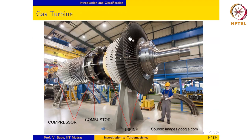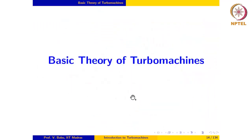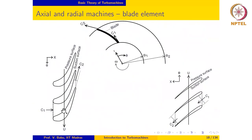In the case of an axial rotor, we draw a circle at a radius R — typically the mid-height of the blade — and take out an element of radial thickness dr at this location. At the mid-radius, we take an element of thickness dr along the entire circumference. We then cut it open and lay the element flat. In the case of a turbine, we take out the element of radial thickness dr, cut it open, and lay it flat — this is what it looks like.